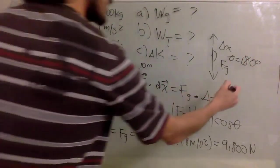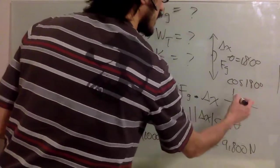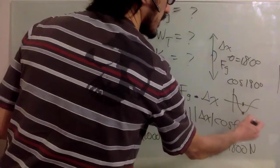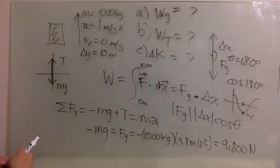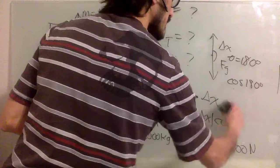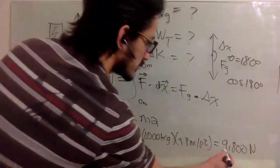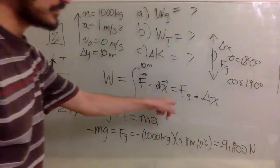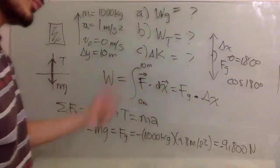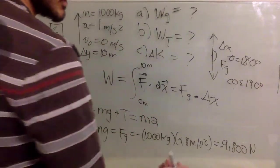The dot product equals |Fg| times |Δx| times the cosine of the angle between Fg and delta x. Fg is pointing directly down and delta x is straight up, so the angle between them is 180 degrees. Fg had a negative sign but we're just looking at the absolute value; delta x was positive — we're just looking at the absolute value. The angle between them is 180, which means cosine = negative one.